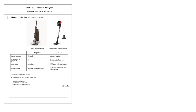Now we're going to go through all the questions I've put together. I've looked back through the entire specification for Paper 2 and tried to pick out things that have never been asked about. The first question is a comparison question between two vacuums, asking you to compare the ergonomic factors, the suitability of the materials, and the manufacturing processes.